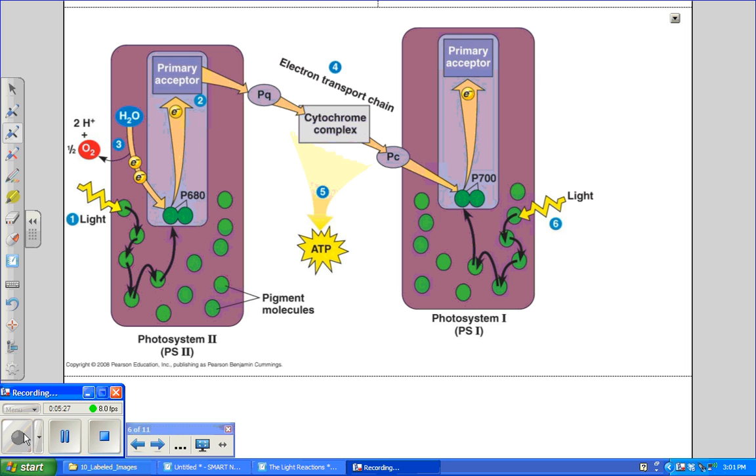The electron transport chain between Photosystem II and Photosystem I is made up of the electron carrier plastoquinone, a cytochrome complex, and a protein called plastocyanin. The exergonic, meaning energy is lost, fall of electrons to a lower energy level provides energy for the synthesis of ATP.